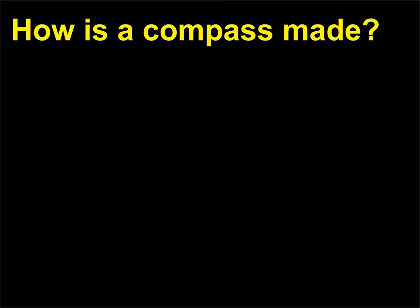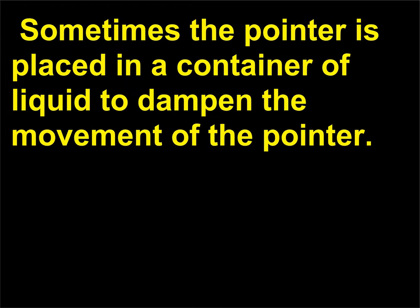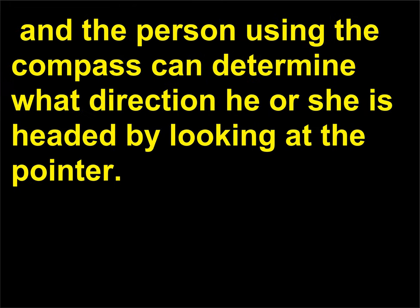How is a compass made? A compass is a magnetized metallic pointer that can rotate about a low friction pivot point. Sometimes the pointer is placed in a container of liquid to dampen the movement of the pointer. The magnetic pointer aligns itself with the north-south orientation of Earth's magnetic field, and the person using the compass can determine what direction he or she is headed by looking at the pointer.